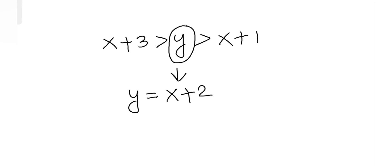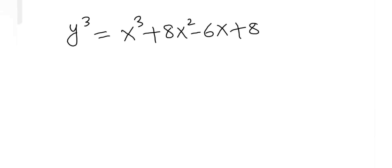Substituting y = x+2: (x+2)³ = x³ + 8x² - 6x + 8. Opening the bracket and simplifying both sides, some terms will cancel out and we get x = 9.